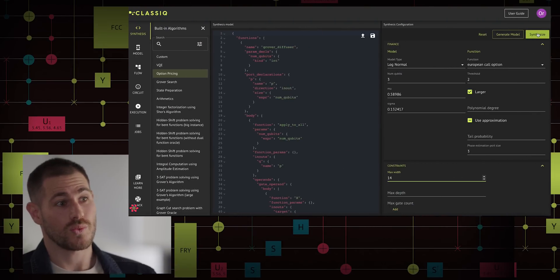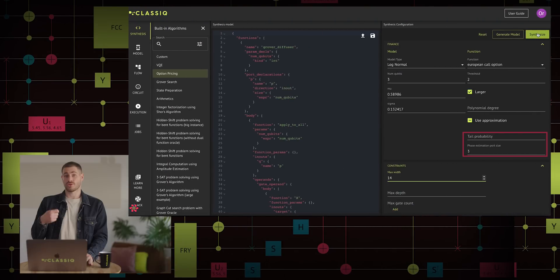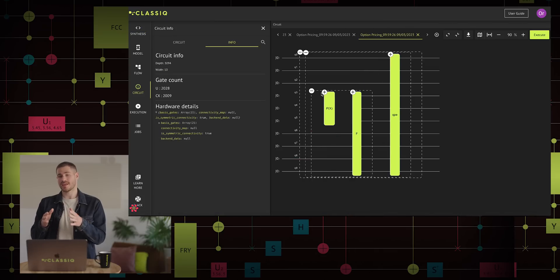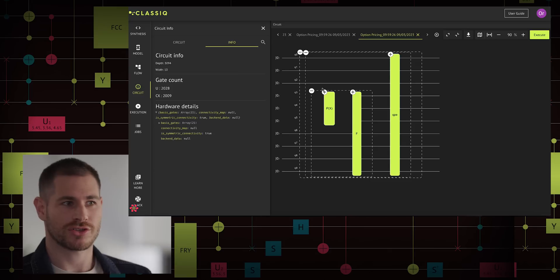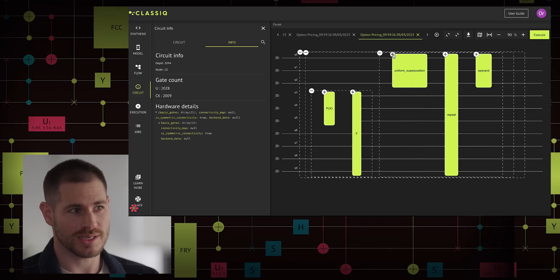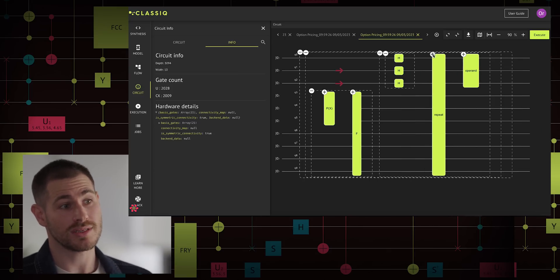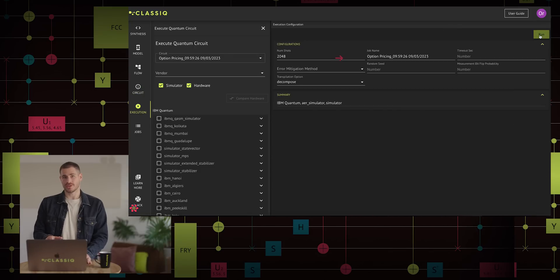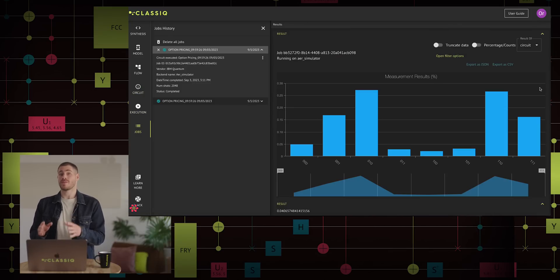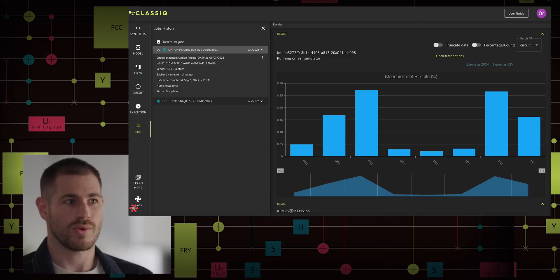Let's see now what happens when we increase our problem size a bit. We now choose three qubits for the phase estimation to store the results, and when we generate the model and synthesize, we receive this 10 qubit circuit. We can see the same structure as before, and within the quantum phase estimation, we have now three qubits that store the results. When we execute the circuit, we now receive a histogram with eight possible results. We can see the final result here on the bottom, which is not as before since we changed the parameters of the model at the beginning, but it is more accurate because we used more qubits to store the results.